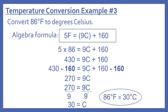Now the same example using the algebra formula: convert 86 degrees Fahrenheit to degrees Celsius. The algebra formula is 5F equals 9C plus 160. We plug in our Fahrenheit value: 5 times 86 equals 9C plus 160. 5 times 86 is 430, giving us 430 equals 9C plus 160.